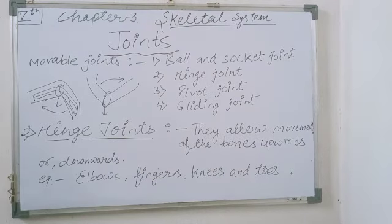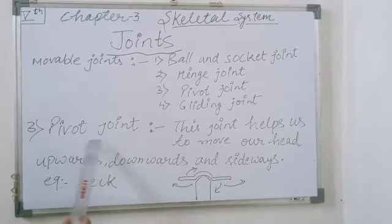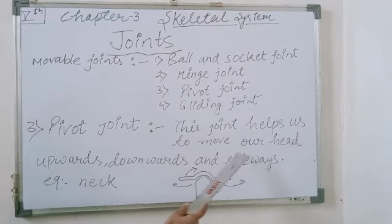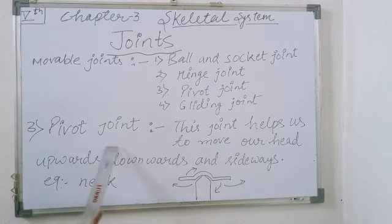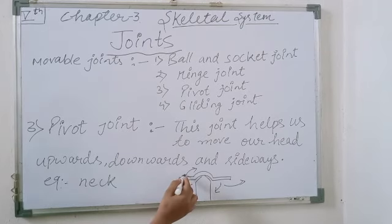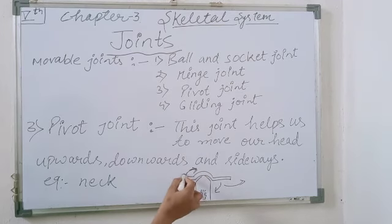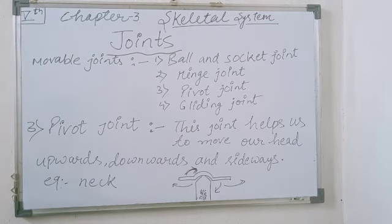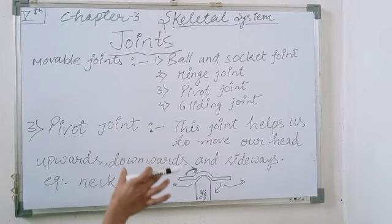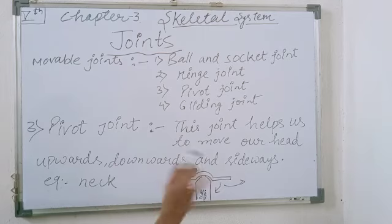The third type is the pivot joint. This joint helps us move our head upward, downward, and sideways. This type of joint is present in our neck. Whenever you move your head, you can move it upward, downward, and sideways. Pivot joints allow the movement of our head upward, downward, and sideways — found in the neck.